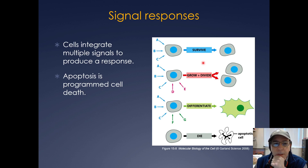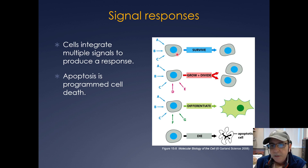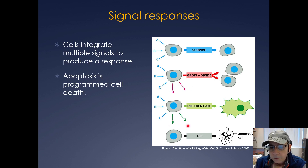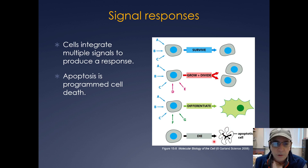Cells are really good at integrating multiple signals, and it's important that they do, because under certain circumstances you want a cell to do different things. Integrating signals A, B, and C might tell the cell to survive. Adding additional signals might tell the cell to grow and divide, or other signals can cause the cell to differentiate into a different cell type. And in certain aspects, losing signals or certain signals can tell the cell to die — through a process called programmed cell death, which is called apoptosis.